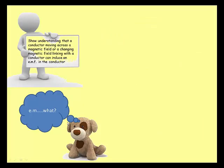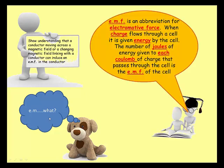A lot of the stuff on this is a little bit overwhelming. The first bit says: show understanding that a conductor moving across a magnetic field, or a change in magnetic field linking with a conductor, can induce an EMF in the conductor. Now, what's an EMF? EMF is an abbreviation for what we call electromotive force.